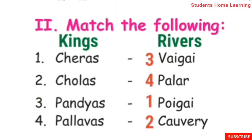Roman Letter 2: Match the following — match the names of kings with the names of their rivers. First: Cheras — Answer: Poygai. Second: Cholas — Answer: Kaveri. Third: Pandyas — Answer: Vygai. Fourth: Pallavas — Answer: Pallar.